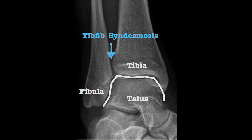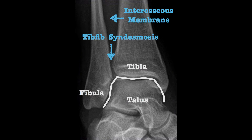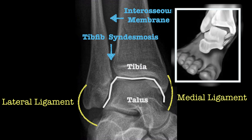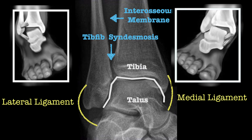The tibiofibular syndesmosis and the interosseous membrane prevent the mortise from opening. There are two groups of ligaments which are crucial for ankle stability — they originate from the two malleoli. The medial ligaments originate from the medial malleolus and prevent over-eversion; they are made up of four ligaments. The lateral ligaments originate from the lateral malleolus, generally preventing over-inversion, and are made up of three ligaments.